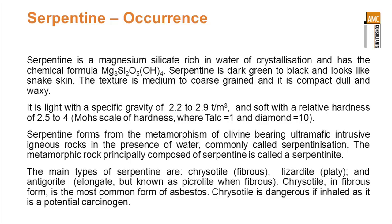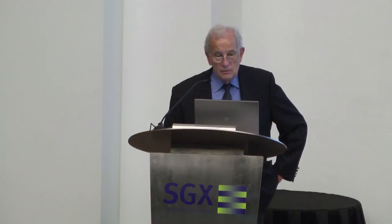There are multiple varieties of serpentine. There's chrysotile, which is fibrous; there's lizardite, which is platy; and antigorite, which is elongate, known as picrolite when fibrous. But chrysotile in its fibrous form is the most common form of asbestos. And as you're aware, asbestos is dangerous if it's inhaled, as it's a potential carcinogen. So there are advantages and disadvantages with some of those forms.